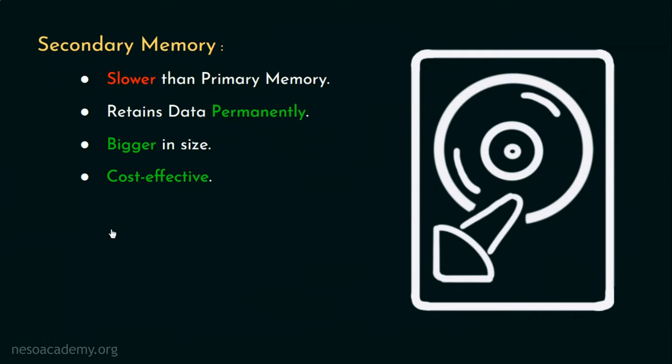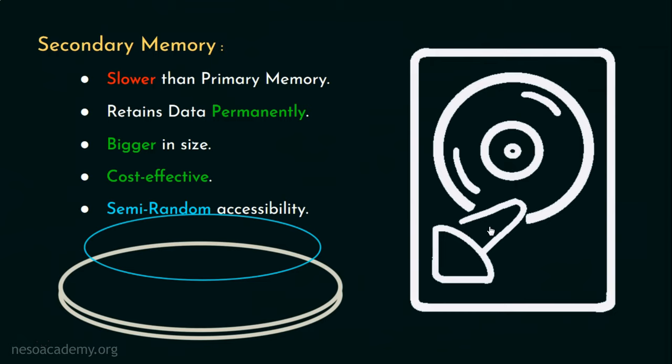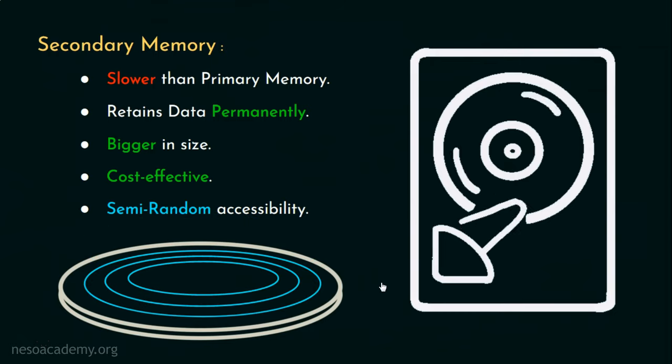For a hard disk drive, the access is semi-random. Now, why is so? Because, using this read-write head, we can randomly get to any of these tracks. But from there, getting to the particular block where the data is stored requires sequential movement. So, the time to access any data in the hard disk drive becomes longer naturally.